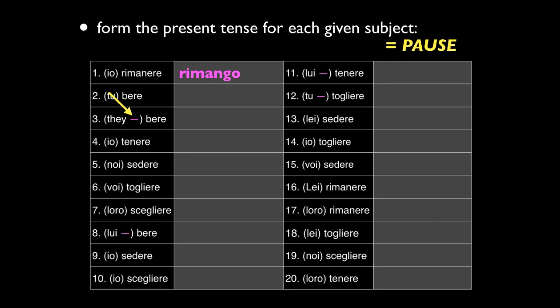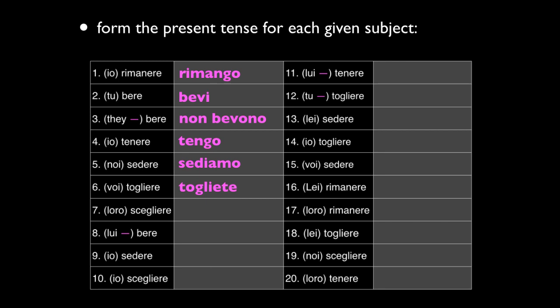Number one: io rimanere — that's rimango. Number two: tu bere — you drink, that is bevi. Number three: they do not drink — non bevono. Number four: I hold — tengo. Number five: noi sedere — we sit, sediamo. Number six: voi togliere — togliete, you all remove. Number seven: loro scegliere — loro scelgono; notice the GL to LG swap, they select or choose. Number eight: he does not drink — non beve. Number nine: io sedere — siedo. Number ten: io scegliere — scelgo. Number eleven: lui non tenere — he doesn't hold, non tiene. Number twelve: tu non togliere — you don't remove, tu non togli. No double I.